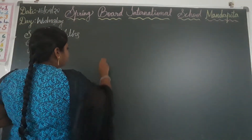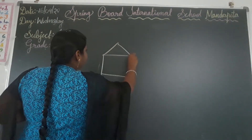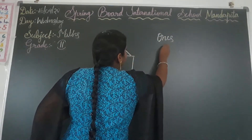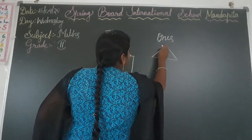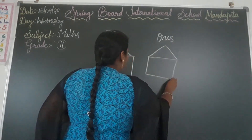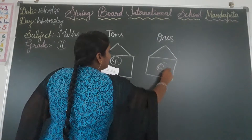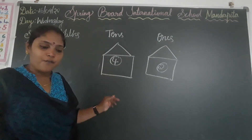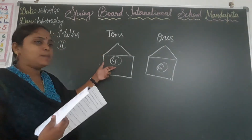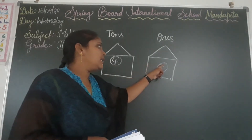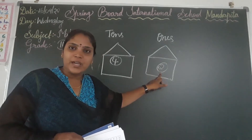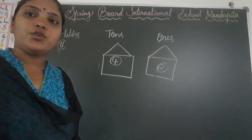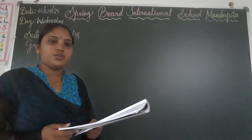I am explaining the first one. It is the 10's place and it is the 1's place. Here given 4 and here given 2. The face value of 4 is 4, and since 4 is in the 10's place, the place value of 4 is 40. The face value of 2 is 2, and since 2 is in the 1's place, the place value of 2 is also 2.